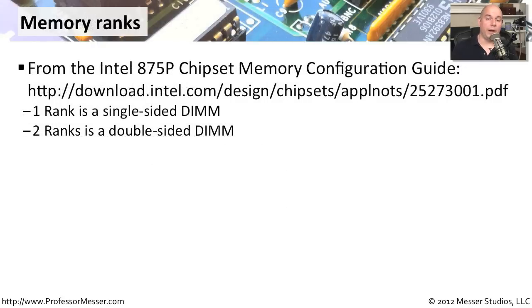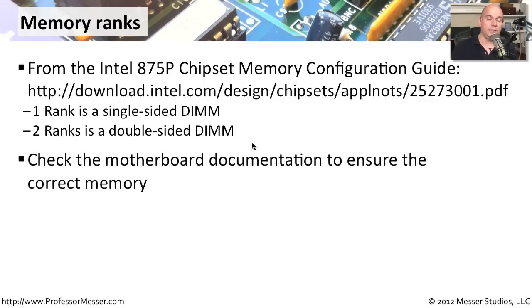If you wanted to read up on where a good practical example of this might be, you can go to Intel's website. There is an 875p chipset memory configuration guide there. It's a PDF file you can download that talks about one rank being a single-sided DIMM and two ranks being a double-sided DIMM. Check your motherboard documentation to see what type of memory it's using, then look at the memory configuration guide to determine if it's single-sided or double-sided.